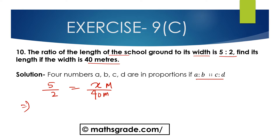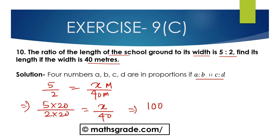We have to convert this ratio 5 divided by 2 into an equivalent ratio. Which number do we multiply 2 by to get 40? We multiply by 20. So we multiply the same number 20 with the antecedent 5. So 5 multiplied by 20, divided by 2 multiplied by 20, equals X divided by 40. That gives us 100 divided by 40 equals X divided by 40. This implies X is 100.